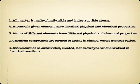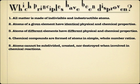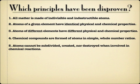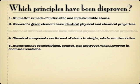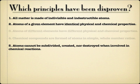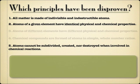We're going to dim out the ones that are still relevant today, but three of these have been disproven. The ones that have not been disproven are the ideas that different atoms have different physical and chemical properties, and that chemical compounds are formed by small whole number ratios. The remaining three — one, two, and five — have all been disproven over time. Let's talk about some of the facts that show that these are no longer relevant.